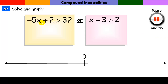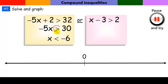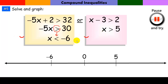Here we want to get x alone. I'll tackle the first inequality: subtract two, divide by negative five — notice the inequality sign switches. Then add three to both sides for the second. My two boundary points are at negative six and five, both open. This says x is less than negative six going this way, and x is greater than five going this way.